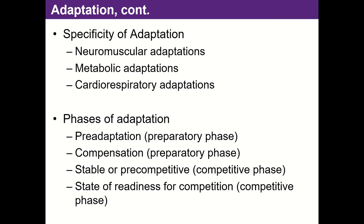Why this matters: if I have a sprint-power athlete, say a volleyball player — volleyball players need to jump really high and get from point A to point B on the court really quickly, but they don't do low-intensity activity for a long period of time — and I have them do a bunch of long runs, what they're going to get are adaptations required for endurance performance. But those are not the adaptations they need for their sport. From a specificity standpoint, if we do a lot of endurance-type work, that can actually take away from strength and power performance.